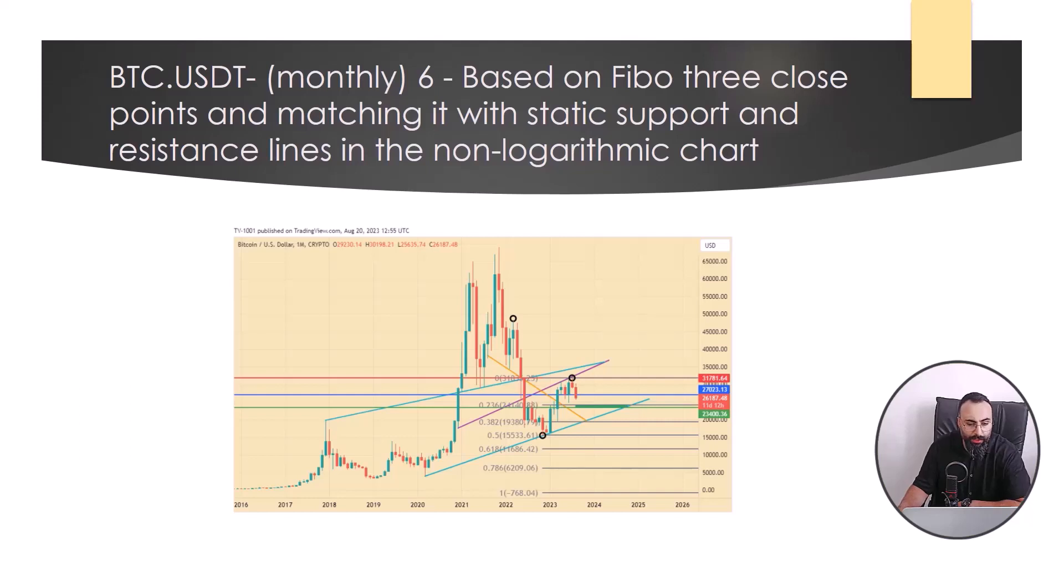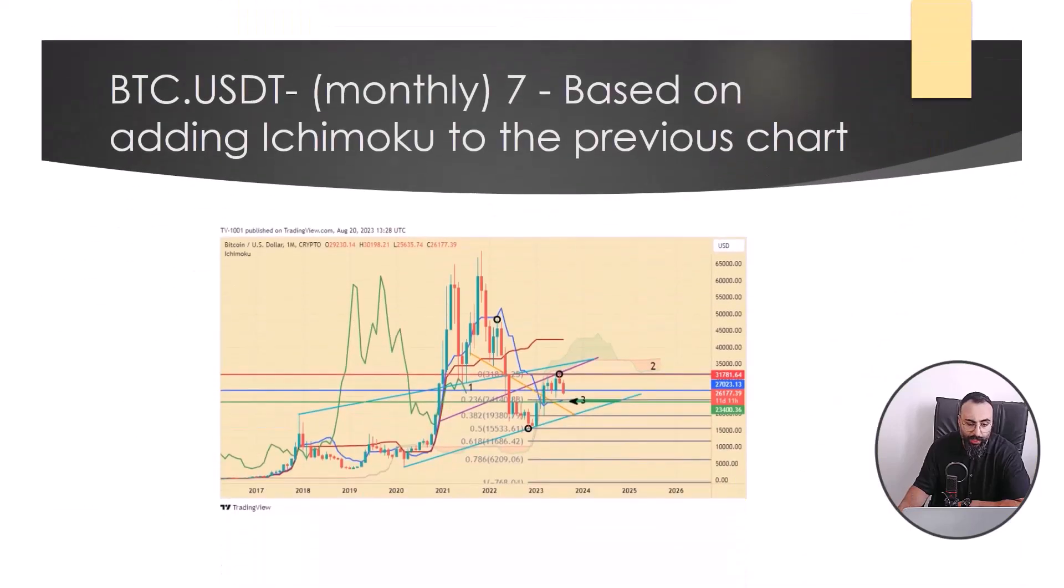Another Bitcoin USDT monthly analysis based on adding Ichimoku to the previous chart. The Chikou Span line or green line is downward and because this line is below the Tenkan-sen or blue line and Kijun-sen or red line and the price candles, these are obstacles to the price increase. The Kijun ahead is red. The Tenkan-sen line coincides with the highlighted range and increases the importance of this area.